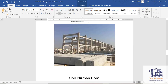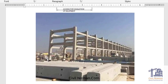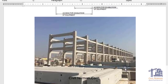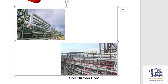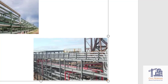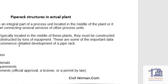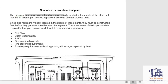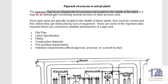This is one typical pipe rack. A pipe rack is an assembly of a portal system. You can see many pipes flowing through intermediate tiers, and on top are the cable trays arranged in three layers. Generally, pipes are located on the lower tiers, and cable trays are mostly on top of the pipe rack. A pipe rack may be an integral part of a process unit located in the middle of a plot plan, or it may be an arterial part connecting several sections of other process units.